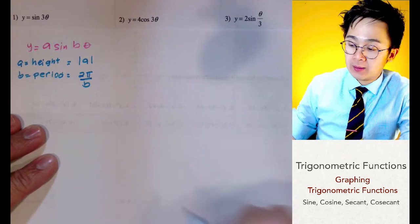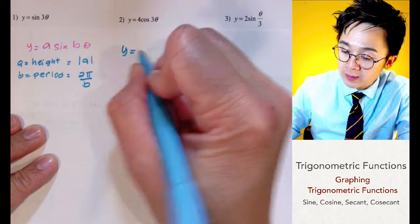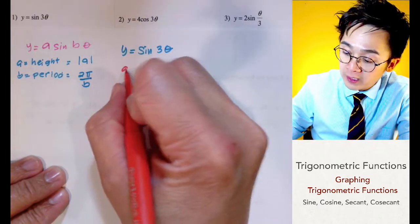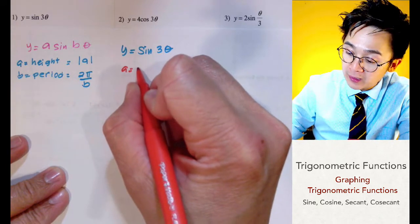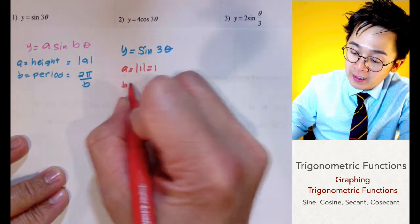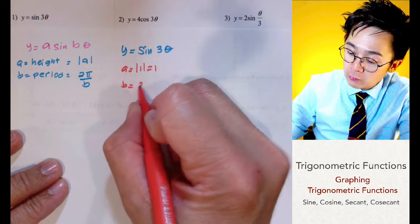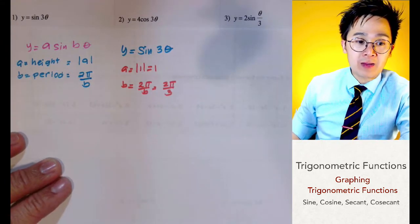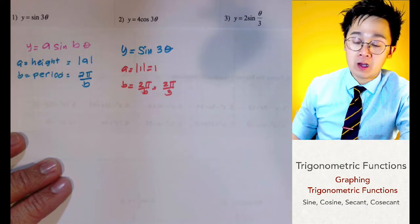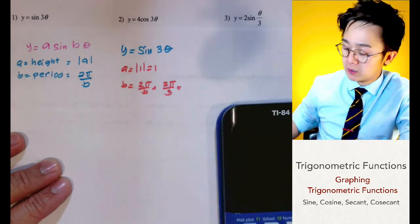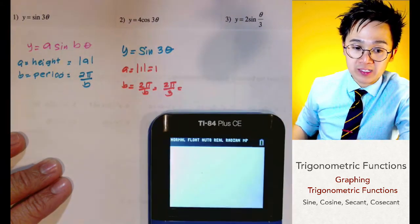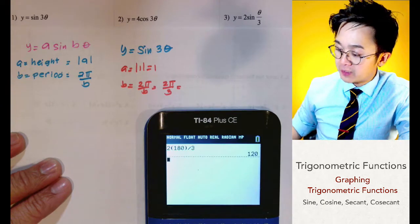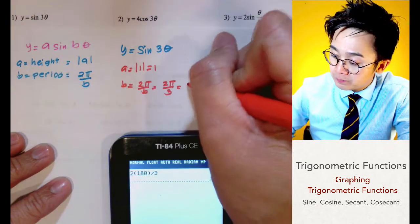So for the function y equals sine three theta, we find the height or a — in this case the amplitude is the absolute value of one, which is one. The period is two pi all over b, which is two pi all over three. Since it's easier to work in degrees, we convert: two times 180 divided by three gives us 120 degrees for our period.